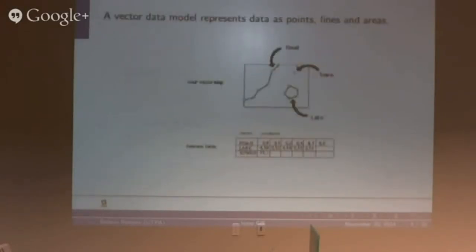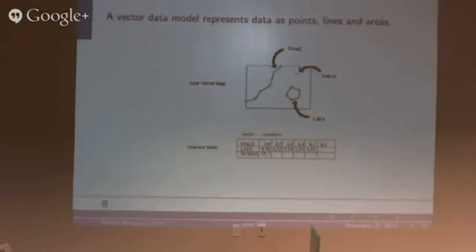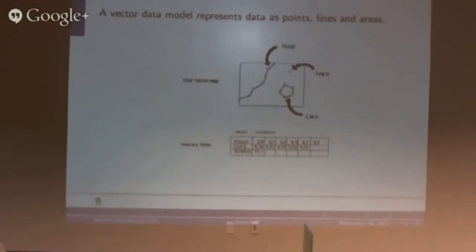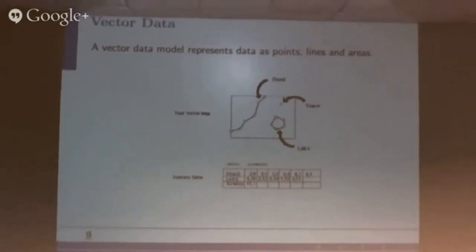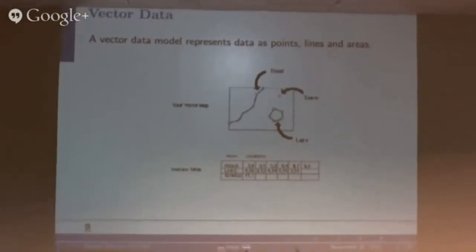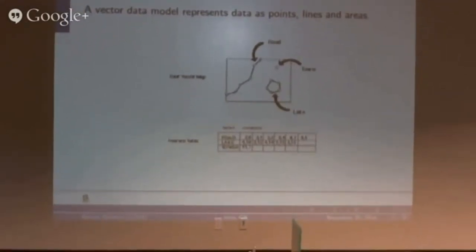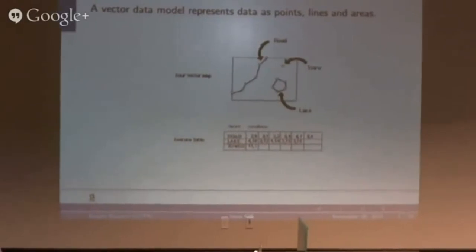Two important types of data in GIS are vector and raster. Vector data is a model that represents data as points, lines, and areas. So basically your x and y coordinates on a map will be represented as a point in GIS.